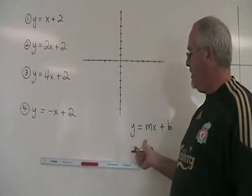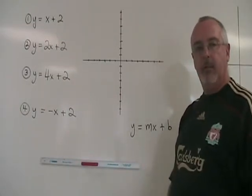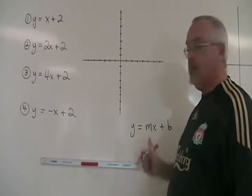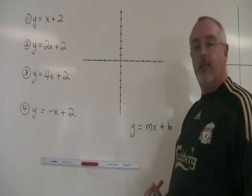With our equation in slope-intercept form, y equals mx plus b, m is the slope and b is the y-intercept.